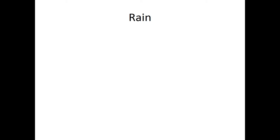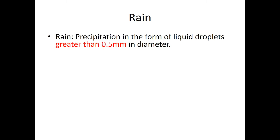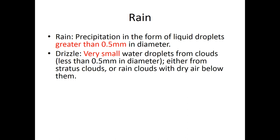First off, rain. I'm sure we all know what rain is — rain is water falling from the sky. But how do we formally define rain as meteorologists? What makes the difference between rain and drizzle, or rain and showers? Well, rain is actually precipitation in the form of droplets that are larger than half a millimeter in diameter. Anything smaller than that we call drizzle.